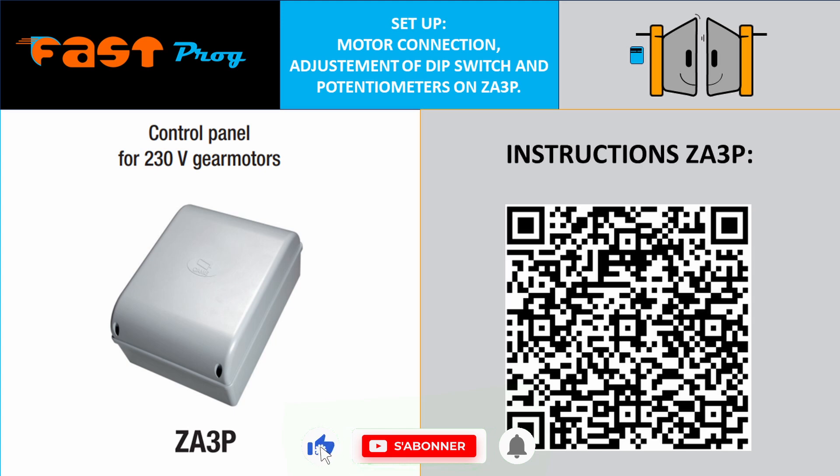We're going to walk through setting up the ZA3P control panel in its standard configuration without automatic closing, no photocells connected to CX and no electric lock. You can easily activate these functions later using the DIP switches if needed.